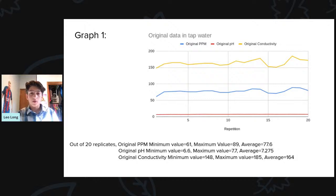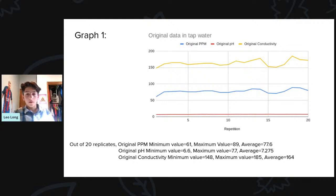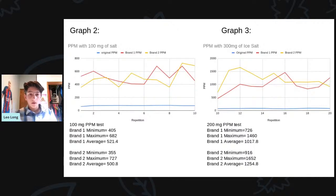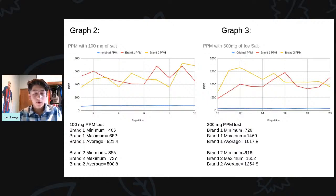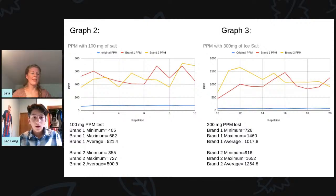Here's my first graph, which basically shows the original data before I put in the different ice salts. In red is the pH, yellow is the conductivity, and blue is parts per million. This is the baseline that I used, and here is when I start putting in the ice salt. Graph two shows the parts per million with 100 milligrams of ice salt. Blue is the original parts per million before I put in the ice salt, and then red is the calcium...